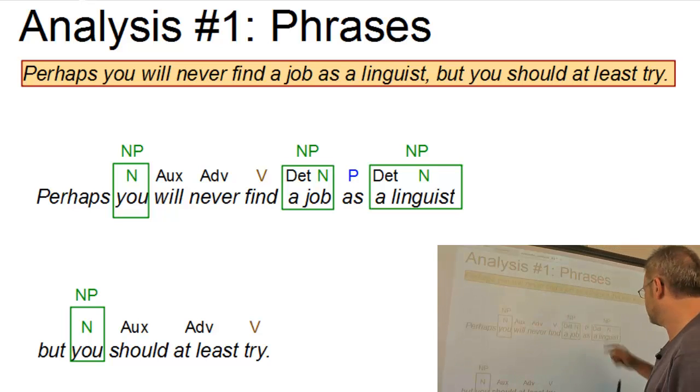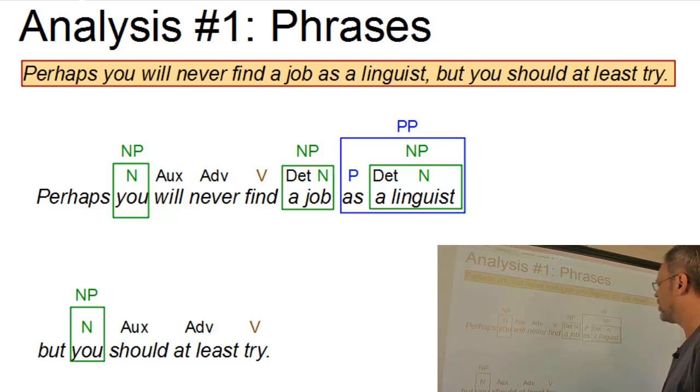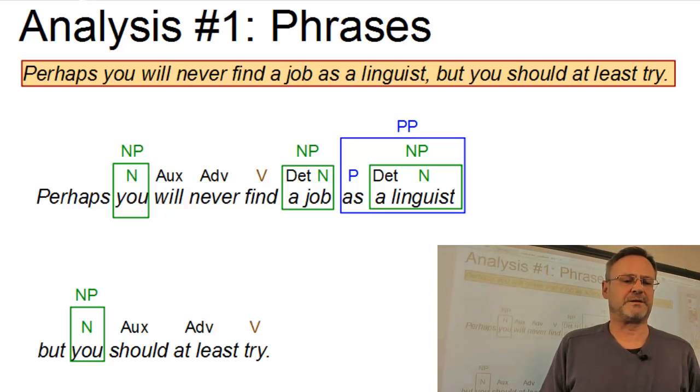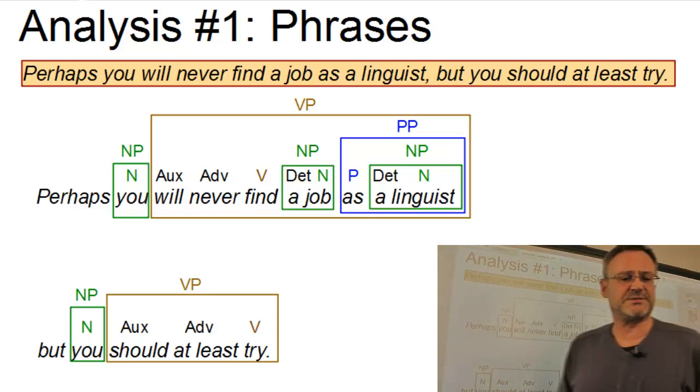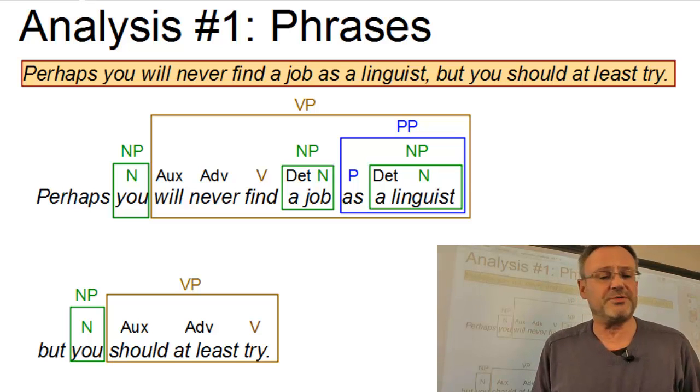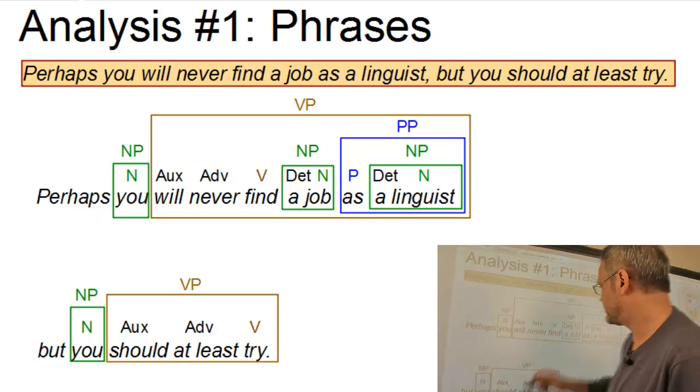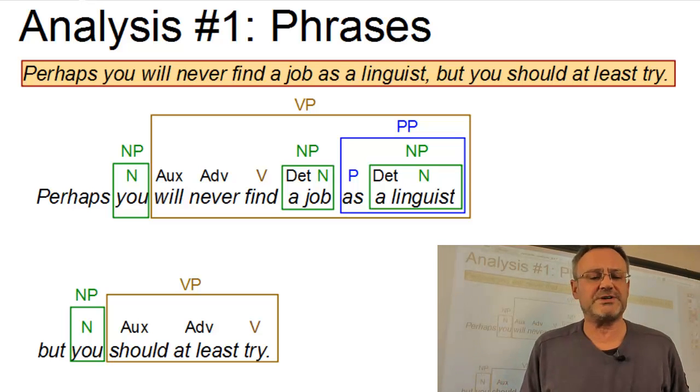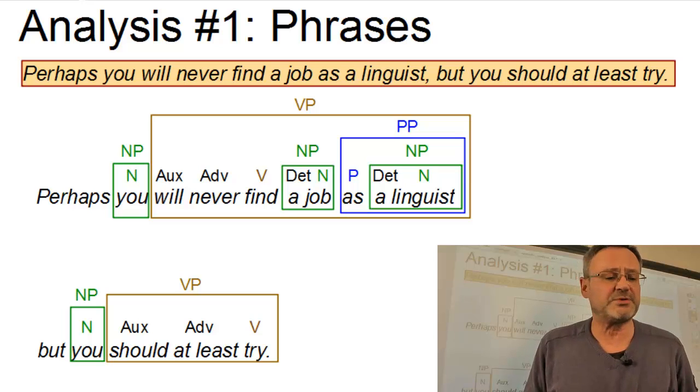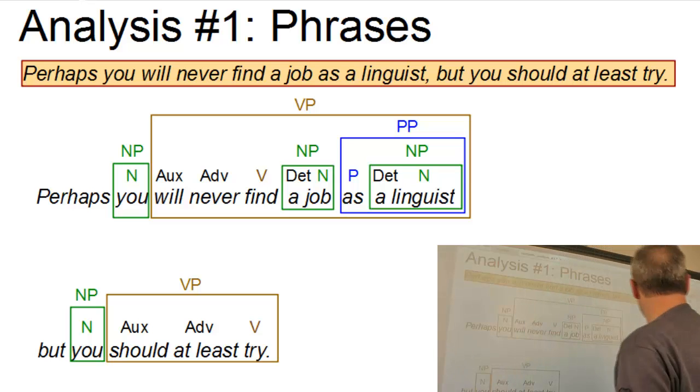The noun phrase a linguist itself is the post-modifier of the preposition as, which serves as the head of a prepositional phrase. And finally we have the verb. In both cases, the verb is pre-modified by an auxiliary verb and a simple adverb. And in the first part of the sentence, it is also post-modified by a noun phrase, a job, and the prepositional phrase as a linguist. So much for the phrasal analysis.